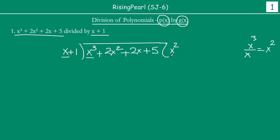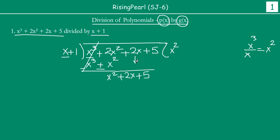We multiply x² by the entire divisor. So x² multiplied by x will be x³, and x² multiplied by 1 will be x². We subtract this from our dividend — x³ minus x³ cancels out, and 2x² minus x² gives x². Then 2x + 5 comes down, so our new dividend becomes x² + 2x + 5.